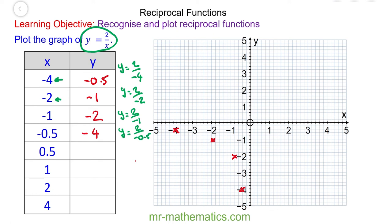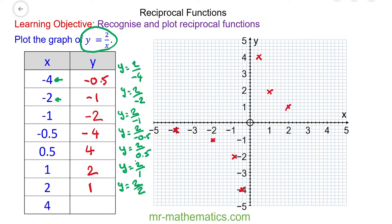Now we move to the positive quadrant where y is equal to 2 divided by positive 0.5, so y is equal to 4. When x equals 0.5, y is equal to 4. Then y is equal to 2 divided by 1, so y is equal to 2 divided by 2, giving y is equal to 1. And finally, y is equal to 2 divided by 4, which is 0.5.